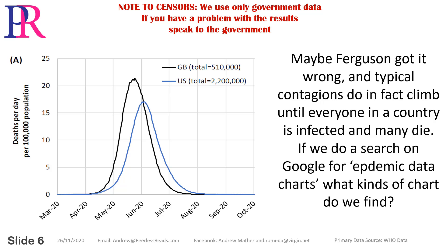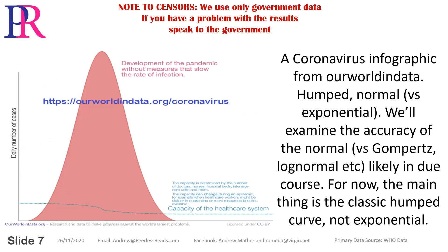Maybe Ferguson got it wrong and typical current agents do in fact climb until everyone in a country is infected and many die. If we do a search on Google for epidemic data charts, what kind of charts do we find? A coronavirus infographic from Our World in Data: humped.